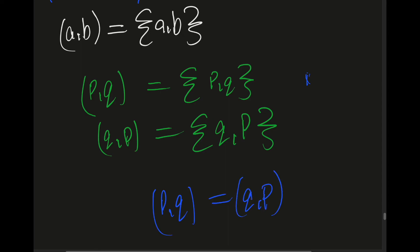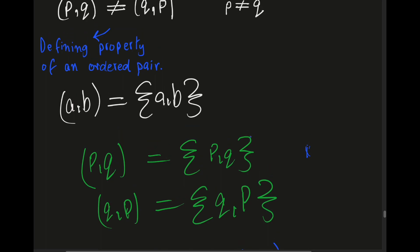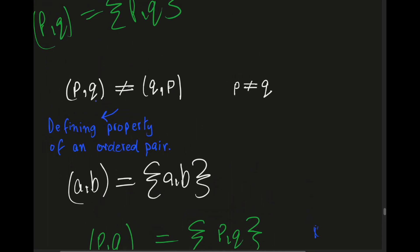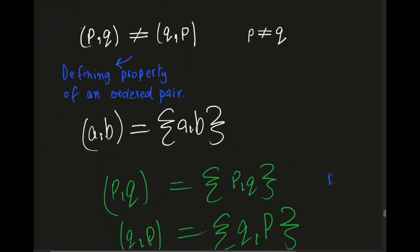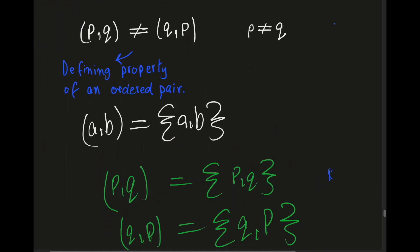And we don't want this property. The property that we want is that (p, q) is not equal to (q, p). So we can define ordered pairs using that simpler definition, but it's not useful to us because this definition does not yield the required property.